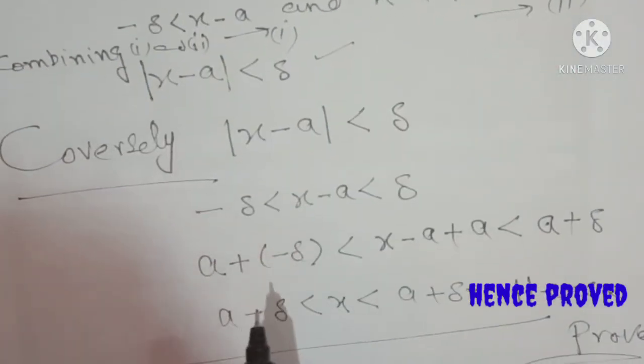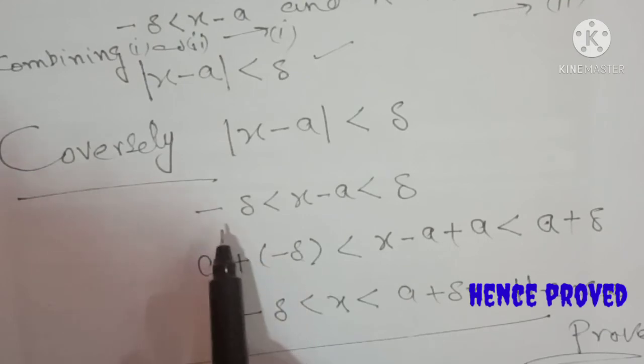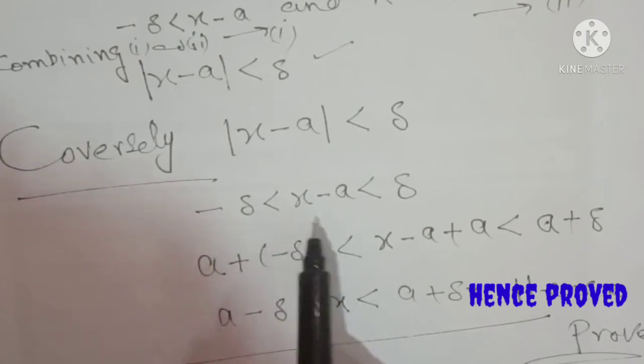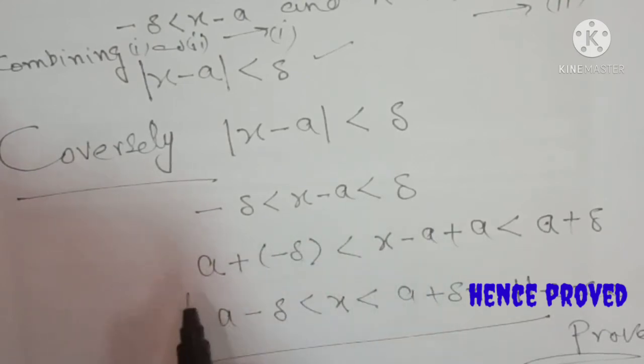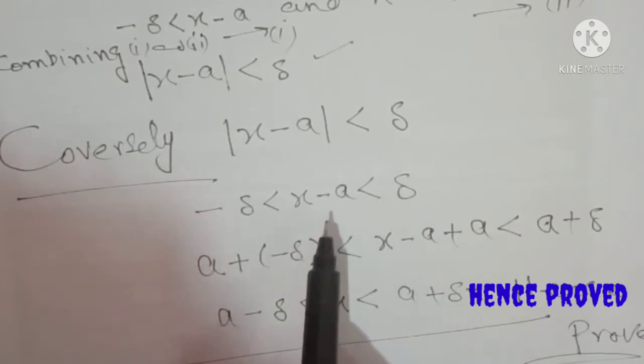It is very simple. From minus delta < x minus a < delta, we just add a throughout to finish the proof.